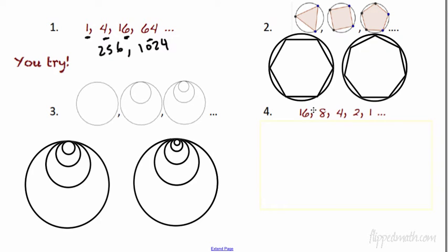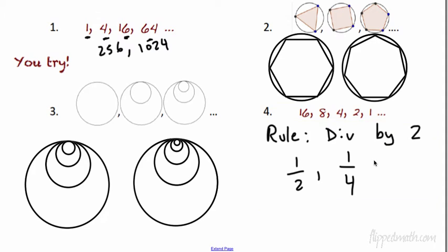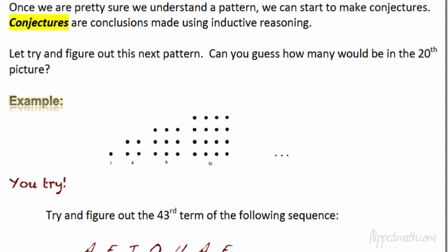For number four, you're dividing by two. When you get down to 1, one divided by two is one half, and then divide that by two to get one fourth. That's inductive reasoning — using patterns to figure out what comes next.